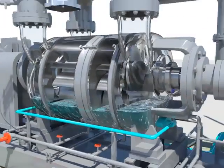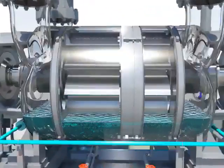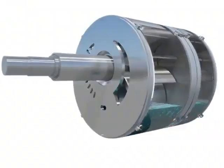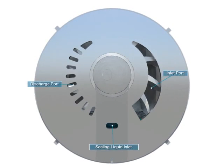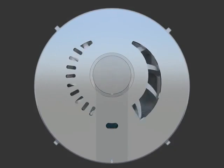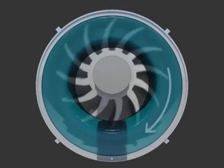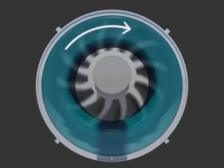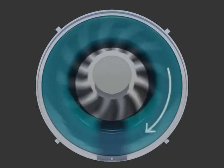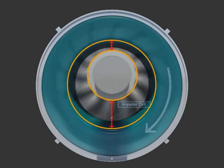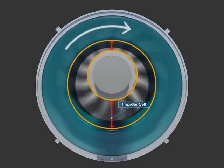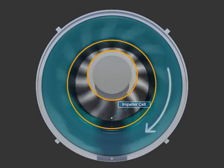The right amount of seal water is filled inside the cylindrical casing and the multi-blade impeller is located at the biased position. The impeller spins at a speed of 495 rpm, and the seal water forms a liquid ring because of the centrifugal force.